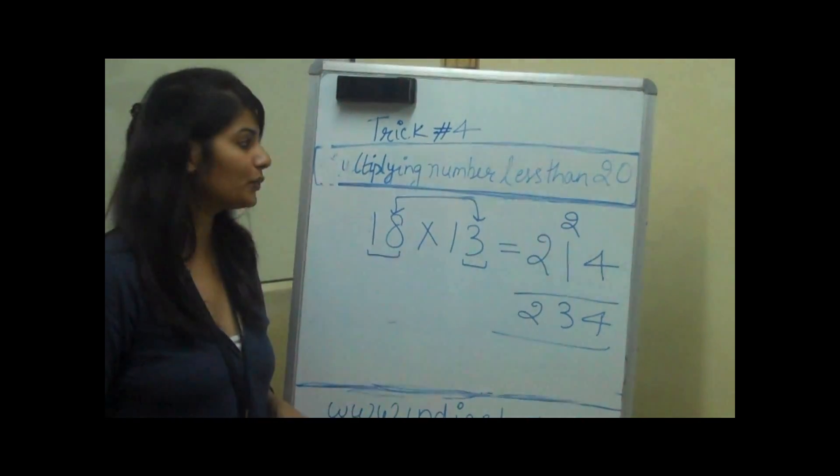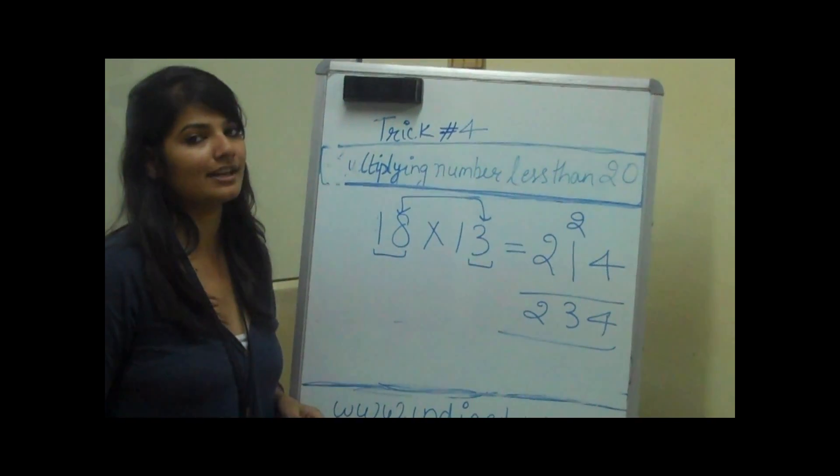So in this manner you can multiply 2 digit numbers which are less than 20.